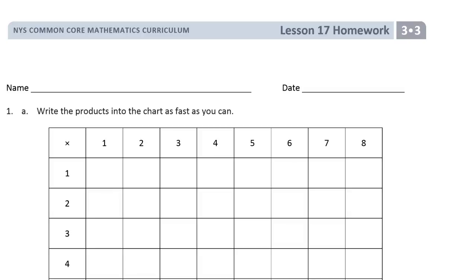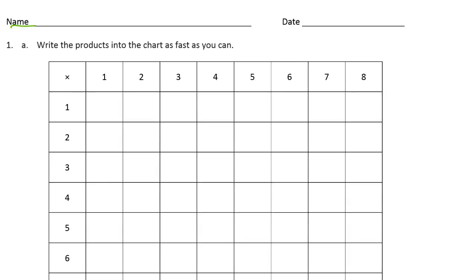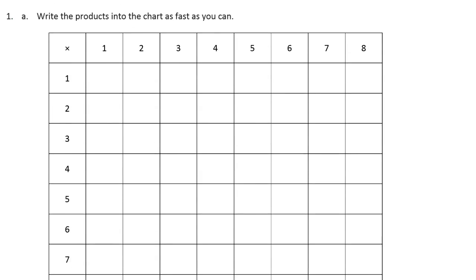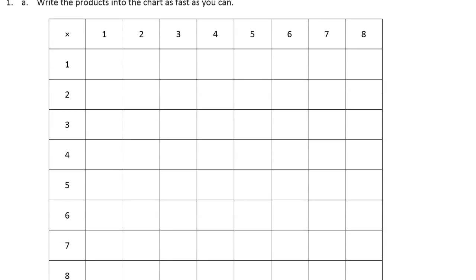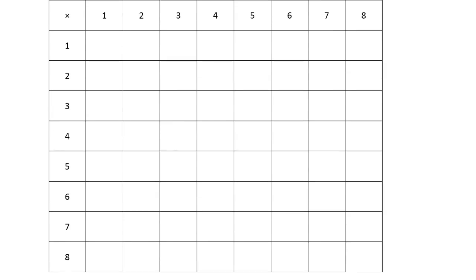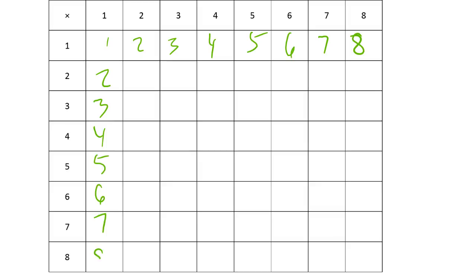Welcome to the homework for Lesson 17, Module 3 of Grade 3. Write your name first. We've got a grid here — it says write products into the chart as fast as you can. The ones are just going to match the other factors because of the multiplicative identity. Then going down the column, the twos are going to be doubles: two, four, six, eight, ten.